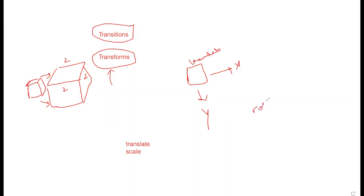You also have rotate, which rotates your object at different angles. You can have rotate-x and rotate-y. Rotate-x rotates around the horizontal axis and rotate-y around the vertical axis. We'll look into more details of these properties when we code them out with transform.